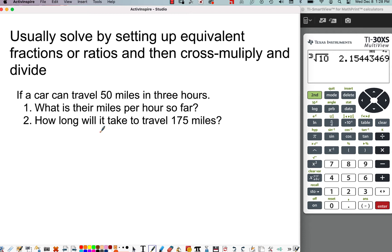So usually solve these type of problems by setting up equivalent fractions or ratios and then cross multiplying and then dividing. So let's say we got this example here. If a car can travel 50 miles in three hours, part one, what is their miles per hour so far?